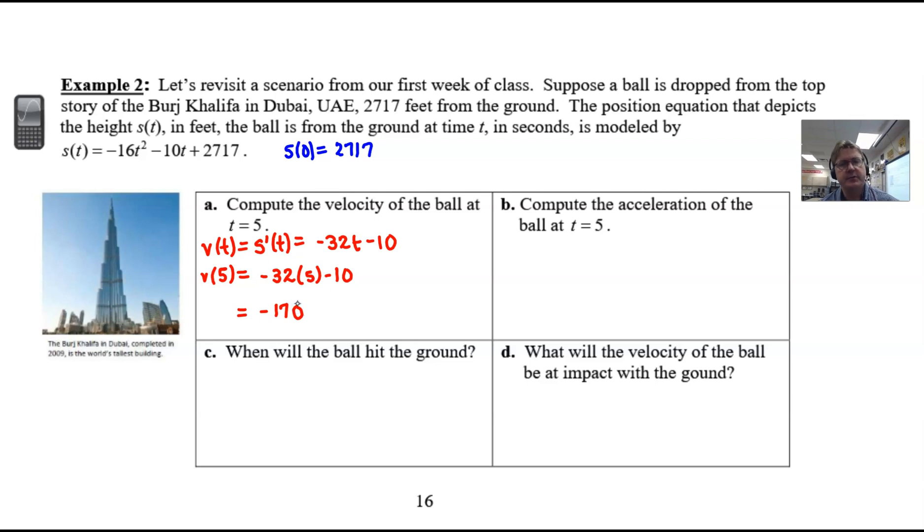We also want to put a label with that. Our measurements are in feet per second. The fact that this answer is negative makes perfect sense because this object is plummeting to the ground. It's falling. The distance that the ball is from the ground is getting smaller, so we make that answer negative because that rate of change is decreasing.